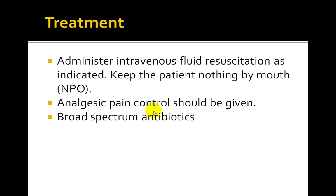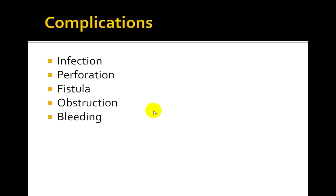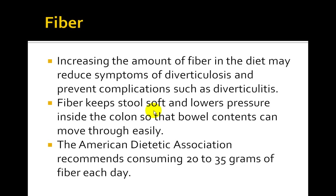For perforations, perform an immediate surgical resection of the diseased bowel. A commonly used procedure is the Hartmann's Procedure, which includes placing a temporary colostomy. Other complications include infection, perforation, fistula, obstruction, and bleeding.